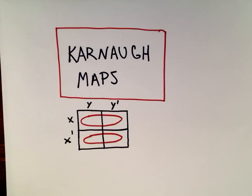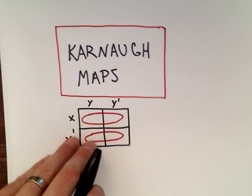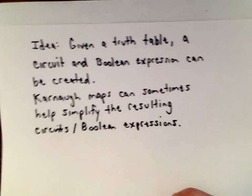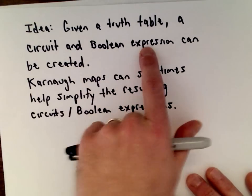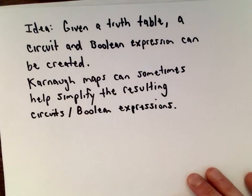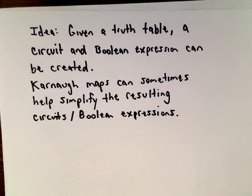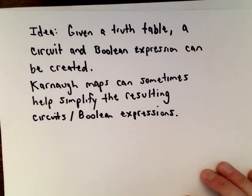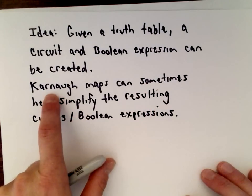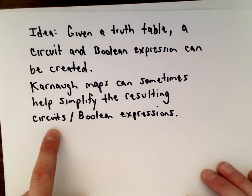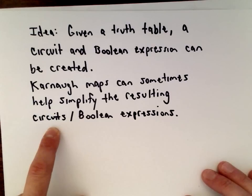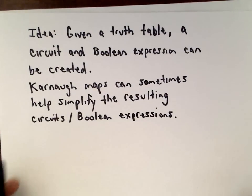This video is going to be about what are known as Karnaugh maps. The basic idea is that you can construct a truth table, and from that you can construct both a circuit and a boolean expression. These Karnaugh maps can be used to simplify the resulting boolean expressions, which in turn can help simplify the circuits that you design.